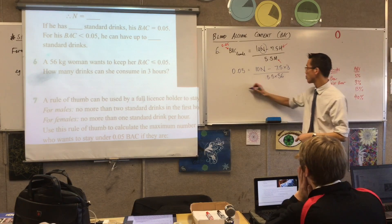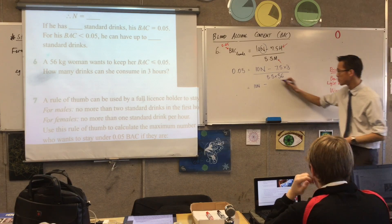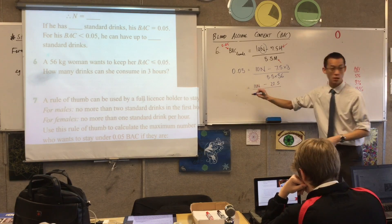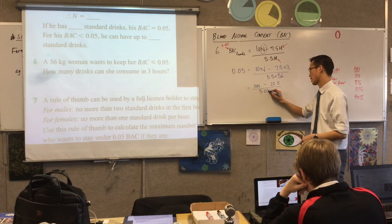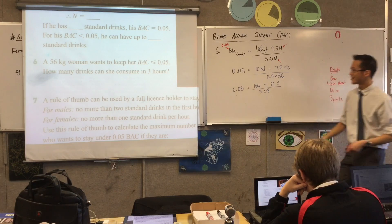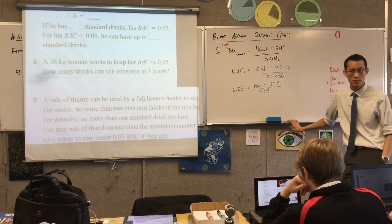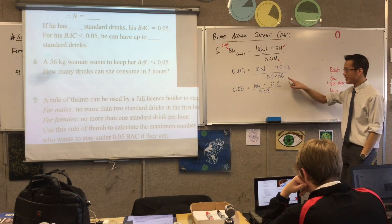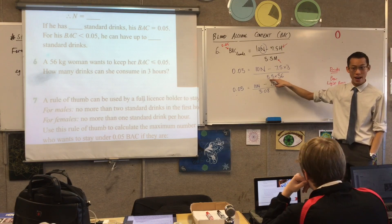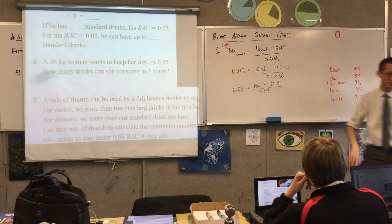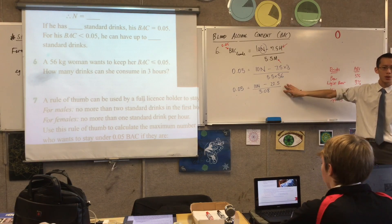Can someone tell me what 7.5 times 3 is? It's 22.5. And the denominator? It is exactly 0.05 — because it's an even number and there's a 0.5. This is 2 times 28, and as soon as you double that it becomes a whole number. Now I'm trying to get N by itself, so I'm going to simplify and rearrange — this is just an algebra question now. I'll multiply both sides by 308.